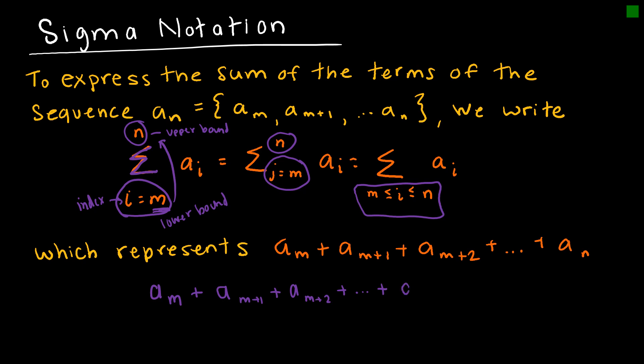until I got to A sub N. So whatever that number is, that is the end of the numbers. And then I would actually find what that result is. And that result would be the summation.